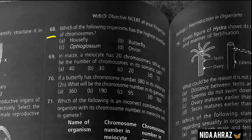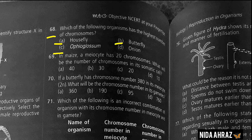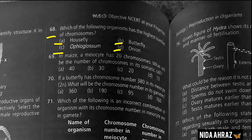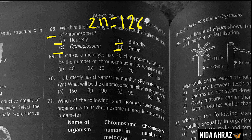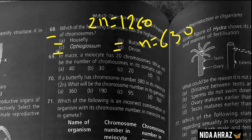Which of the following organisms has the highest number of chromosomes — housefly, butterfly, Ophioglossum, or onion? Ophioglossum is a fern having the highest number of chromosomes: chromosome number in meiocytes is 2n = 1260 and in gametes n = 630. Option C is the correct choice.